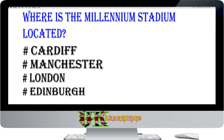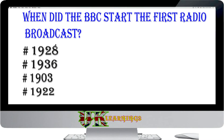Where is the Millennium Stadium located? Cardiff, Manchester, London, Edinburgh. The answer is Cardiff. Sporting events take place at major stadiums such as Wembley Stadium in London and the Millennium Stadium in Cardiff.